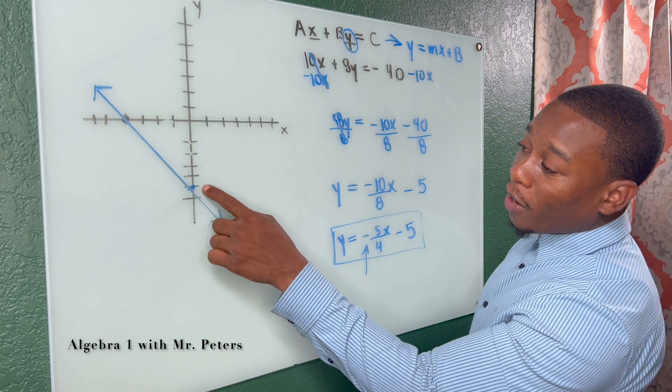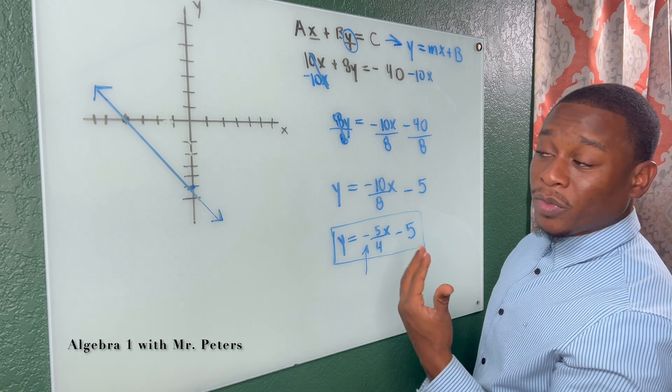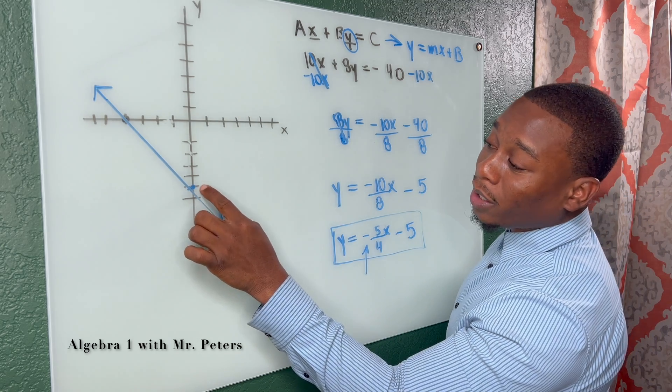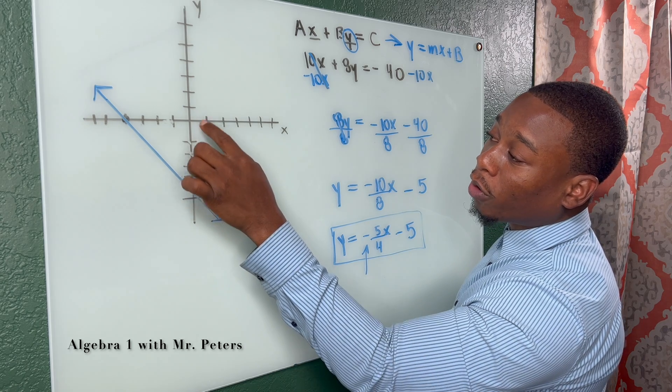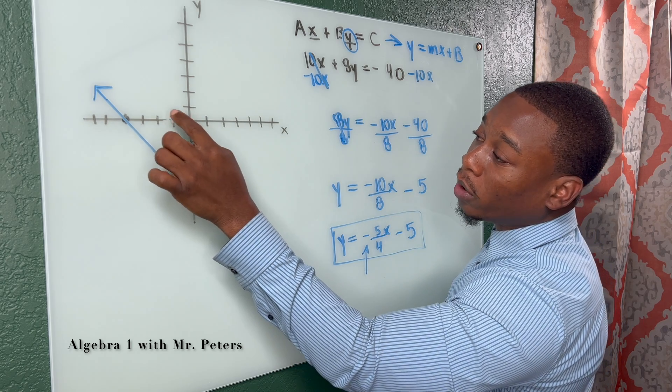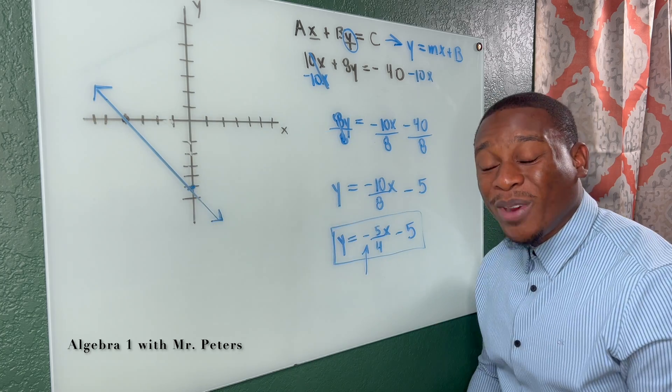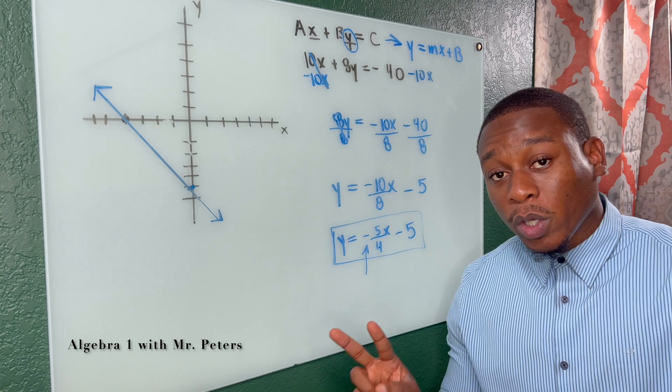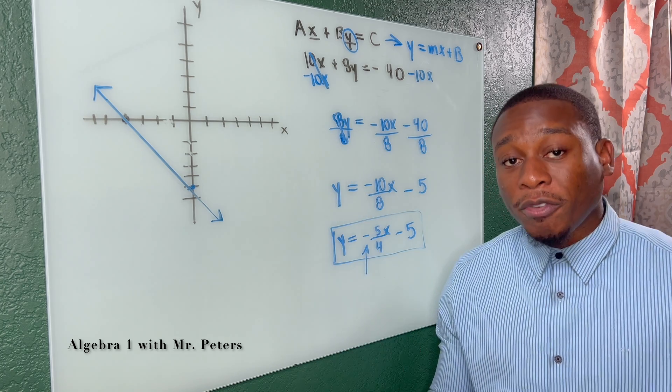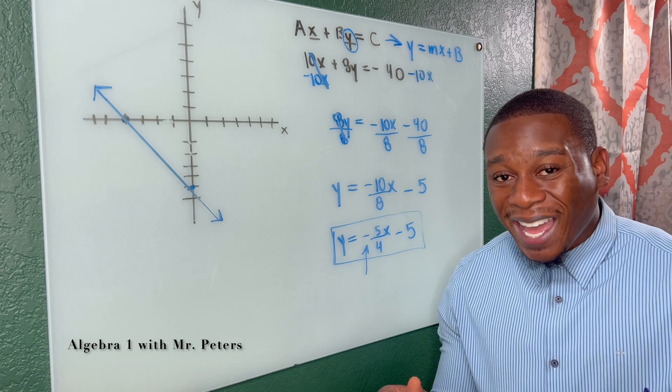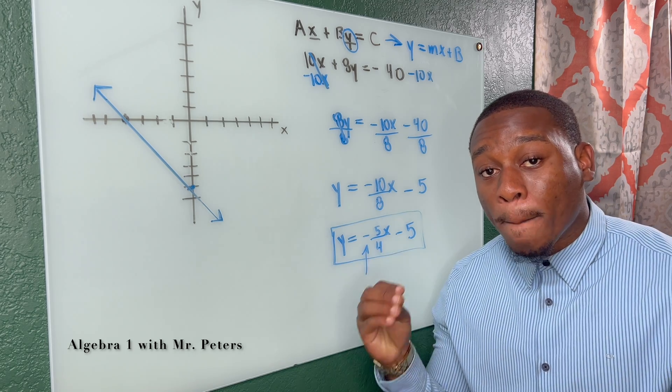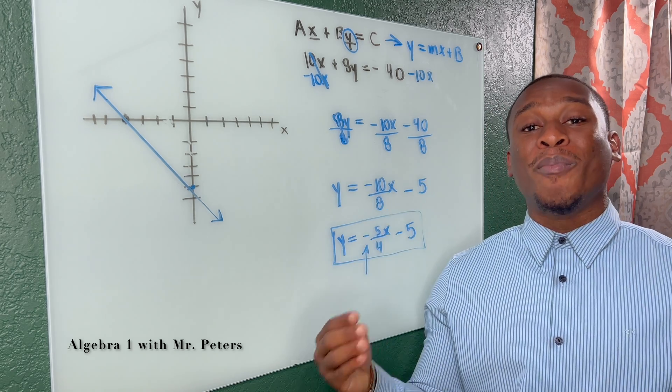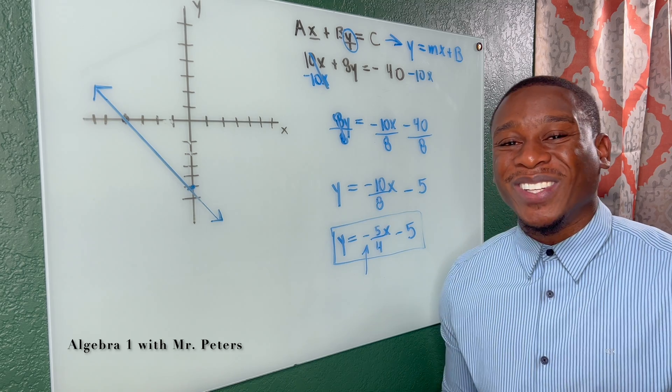So if we wanted to use this format, we could have also graphed and used the slope to get to the next point. So once I graphed this point, I could use my slope, 5 over 4, to get to the next point. And if I did, I'll go up 1, 2, 3, 4, 5, and over 1, 2, 3, 4. And we have the same exact line. So these are two methods we could use when we are graphing linear equations in two variables. And with that, we're going to go on to the second most common type of math problems you'll see when we're dealing with this topic.